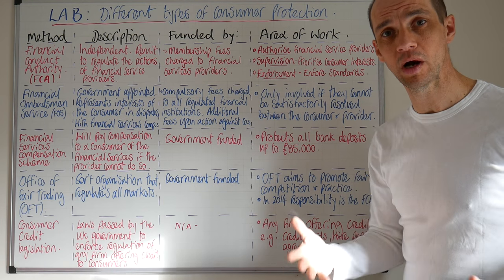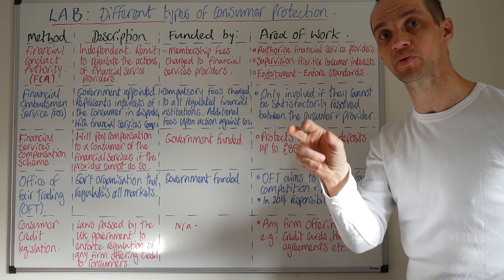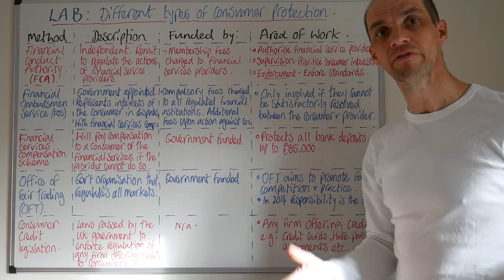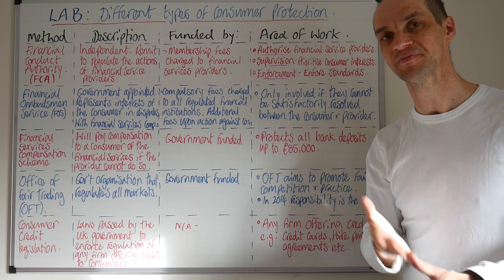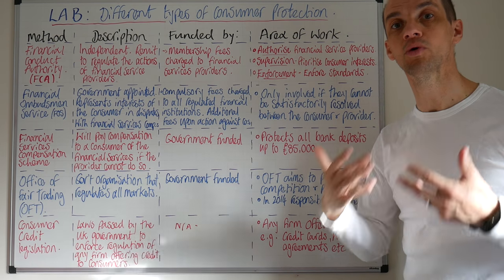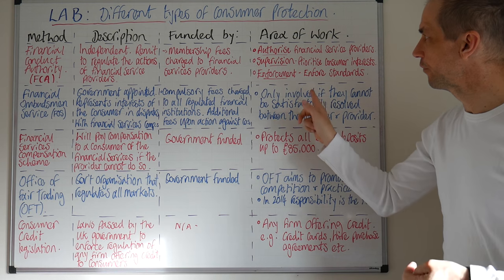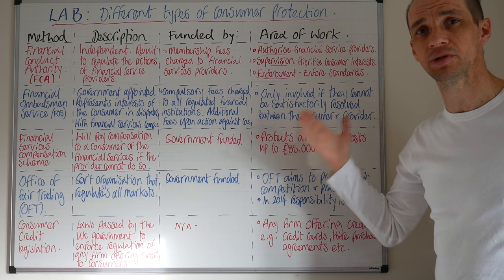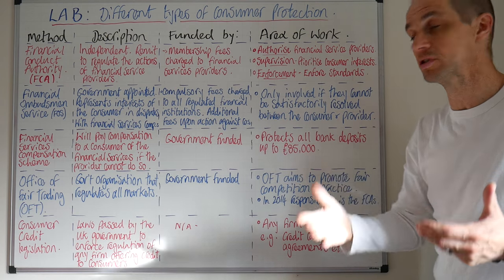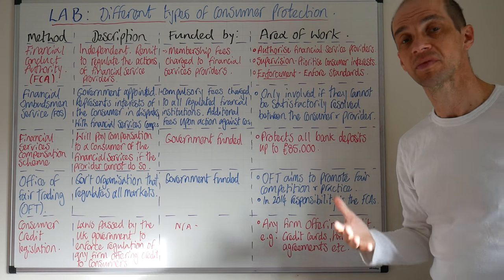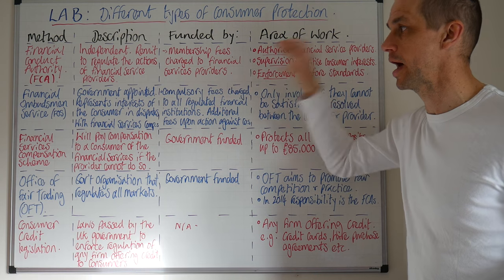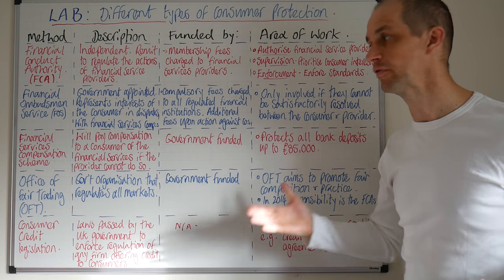A recent case example to consider might be the fact that when interest rates were reduced so dramatically in 2008, down to 0.5%, not all financial service providers wanted to pass on such savings to their customers. Various customers got together and actually got the Ombudsman on board and fought against their mortgage providers. The Ombudsman service is only involved if disputes between the consumer and the provider cannot be satisfactorily resolved, and those fees are paid by financial service providers.